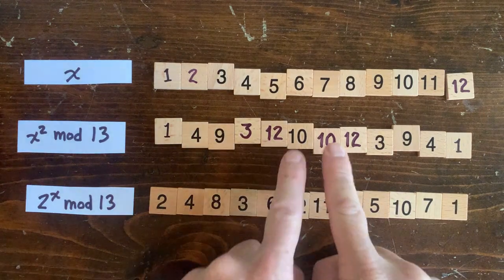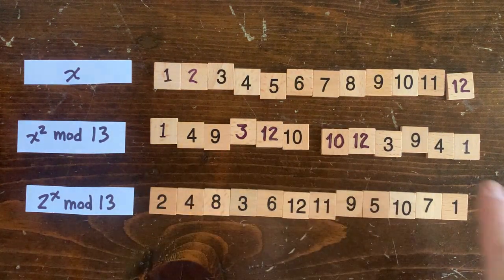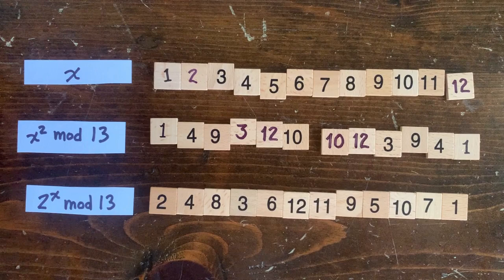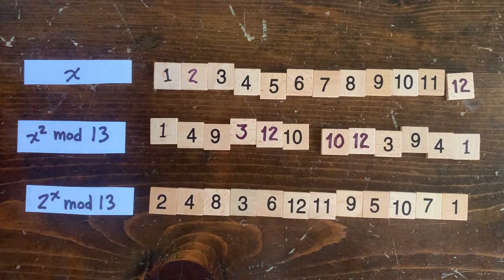For one thing, the remainders of 1 squared through 6 squared are mirrored in the remainders of 7 squared through 12 squared. And that makes sense.